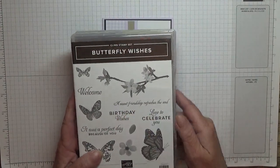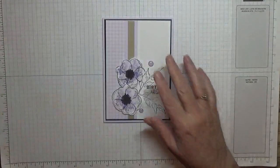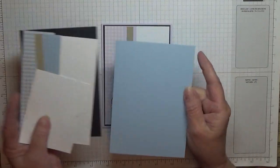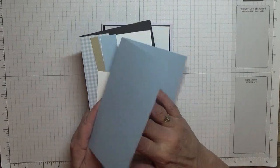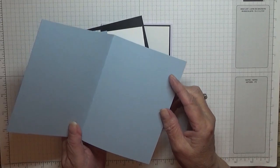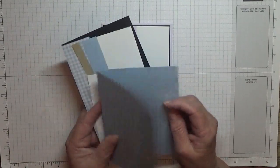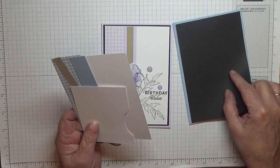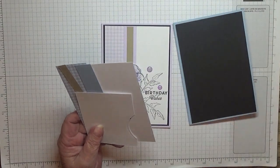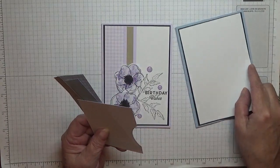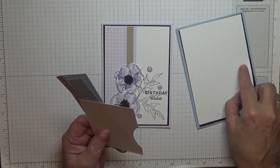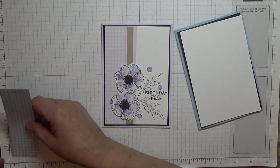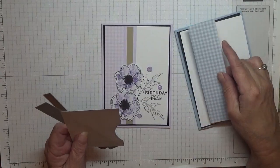The cardstock I'm using: I have got a Seaside Spray card base of eight and a quarter inches scored at four and one eighth, folded in half; a piece of Basic Black at five and five eighths by three and seven eighths; a piece of white at five and a half by three and three quarters.